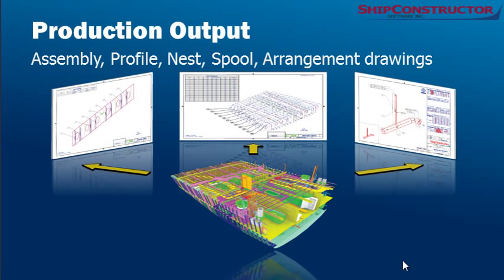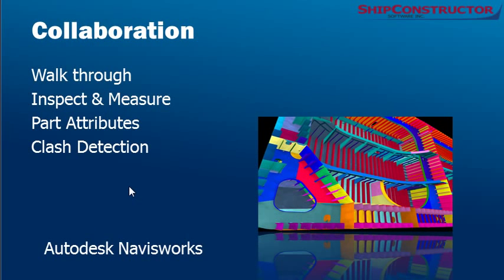The production outputs from ShipConstructor from the 3D model include 3D assembly drawings, profile drawings, nest drawings, spool drawings, and arrangement drawings. The Navisworks model created from ShipConstructor allows you to walk through, inspect and measure your model and look at the attributes of all parts.